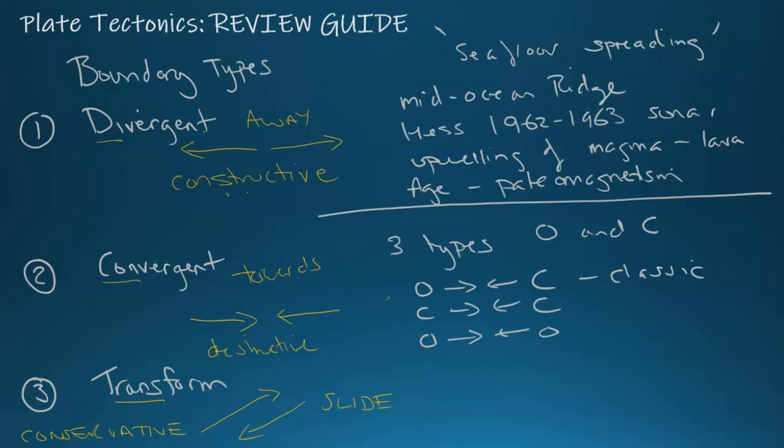The transform, again, you're going to have earthquakes primarily here. You're going to have the friction. And the most famous one we can look at is the San Andreas fault line or fault system in California in the U.S.